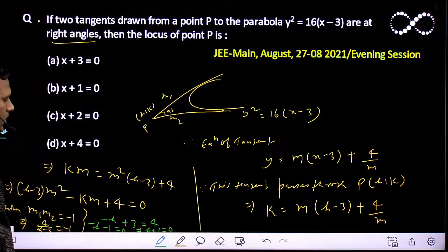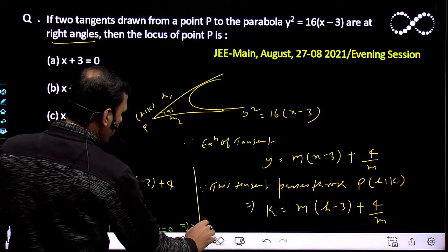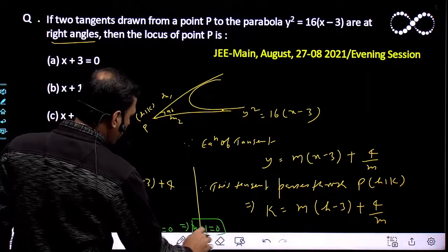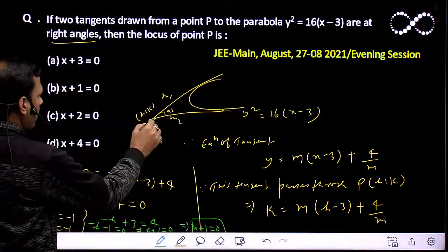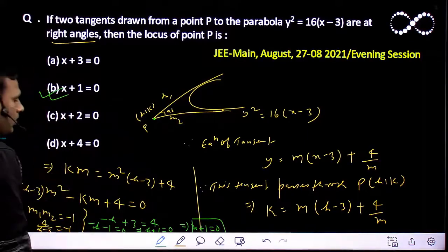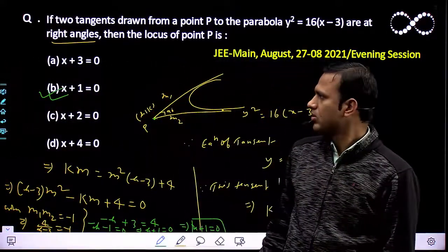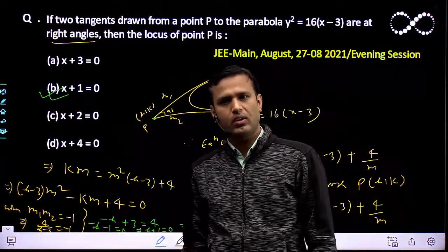What does this mean? The locus we got is h + 1 = 0. That means x + 1 = 0 is the required equation of locus of point P. So x + 1 = 0 is your answer. Option B is the correct option. Thank you.